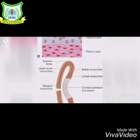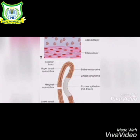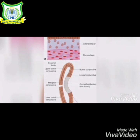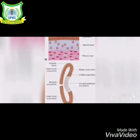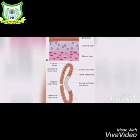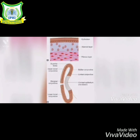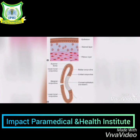The conjunctiva consists of three layers: epithelium, adenoid layer, and fibrous layer. The epithelium is a two-to-five layered non-keratinized epithelium and also contains goblet cells, which constitute about 10% of the epithelium. The epithelial layer is divided into: marginal conjunctiva, tarsal conjunctiva, fornical conjunctiva, bulbar conjunctiva, and limbal conjunctiva.